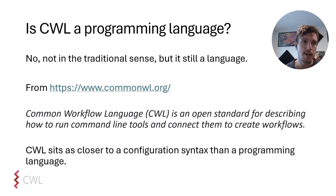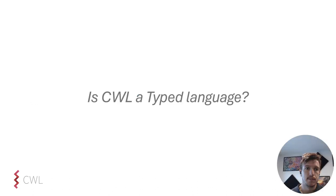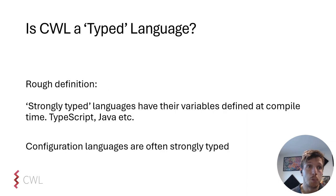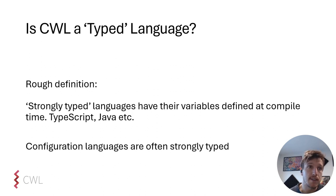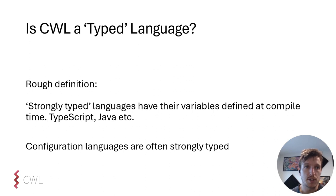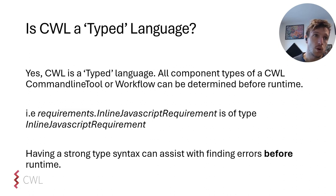But it is still a language. From the CWL homepage, CWL is an open standard for describing how to run command line tools and connect them to create workflows. So CWL sits closer to a configuration syntax than a programming language. Is CWL a typed language? We roughly define a typed language as having their variables defined at compile time, not run time. TypeScript and Java are great examples of typed languages, while languages like Python can be strongly typed depending on the developer. Configuration languages are often strongly typed as they need to adhere to a certain structure to be interpreted. So yes, CWL is a typed language. All component types of a CWL command line tool or workflow can be determined before run time. This is what allows CWL tool validate to fail if the syntax is incorrect.